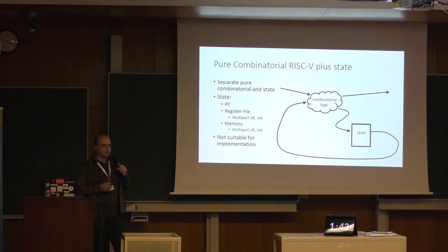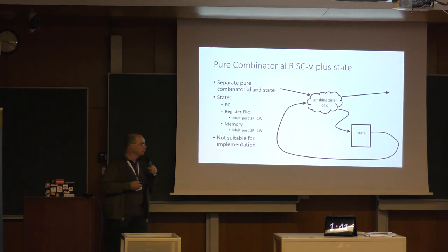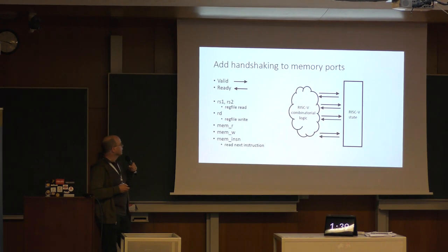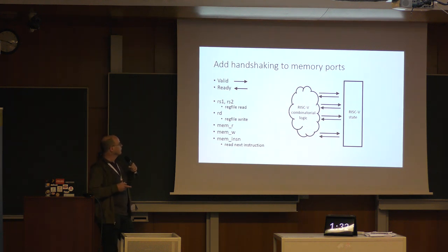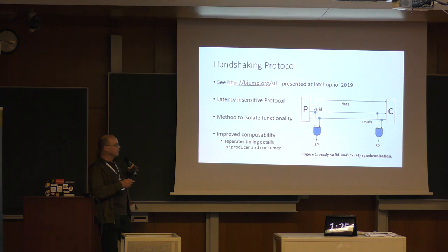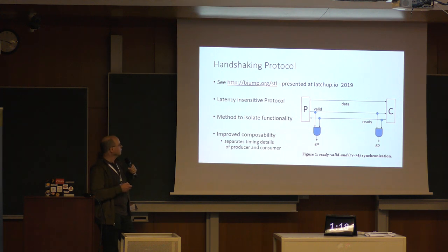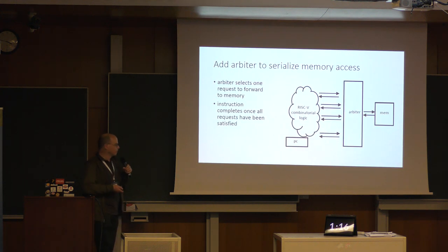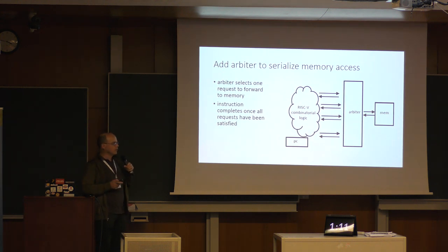I've got that running with RISC-V formal, which is great. I then make some of the ports handshaked with ready/valid signals — this is a fairly well understood handshaking type protocol. It helps you isolate the state and functionality between blocks and it's good for composability. Then my idea is just to stick an arbiter in there to connect to the memory.